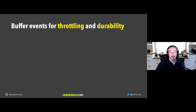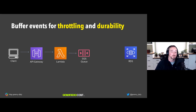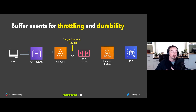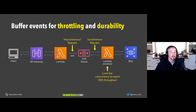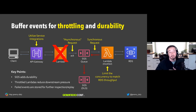For buffering and throttling: typically you might invoke a Lambda function that writes to RDS, but RDS could get overwhelmed. Put an SQS queue in between — it captures events and replies to the client that it received them. Then a throttled Lambda function with a set concurrency pulls the SQS queue. If data is processed successfully, great; if not, the redrive policy captures it. Key points: SQS has durability, throttled Lambdas reduce downstream pressure, and failed events are stored for inspection and replay. You can also skip the Lambda and use API Gateway directly to SQS via service integrations.